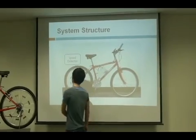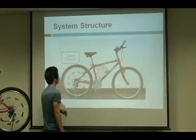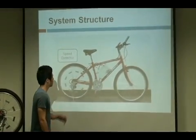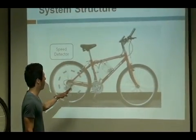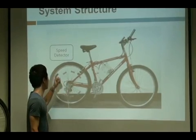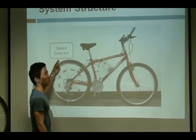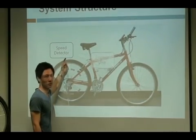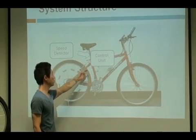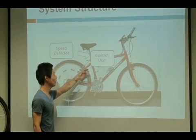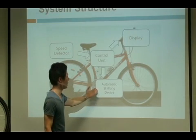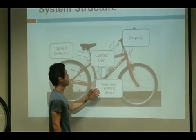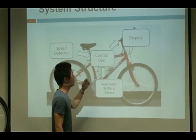The system could be divided into four parts: number one, speed detector; number two, control unit; number three, automatic shifting device and display.